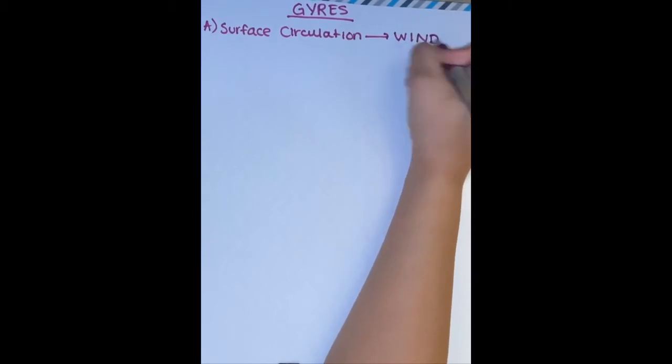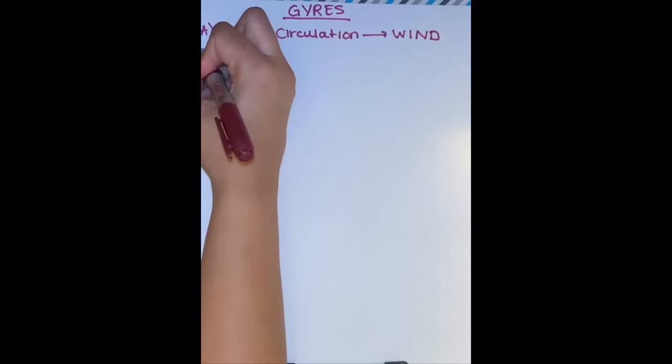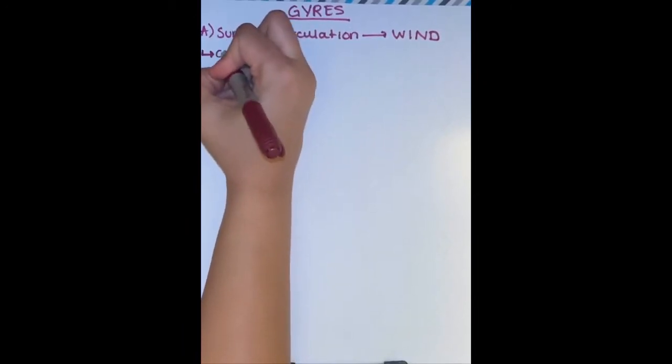The second type of circulation is deep water circulation, which happens underwater. However, we must first understand wind patterns.